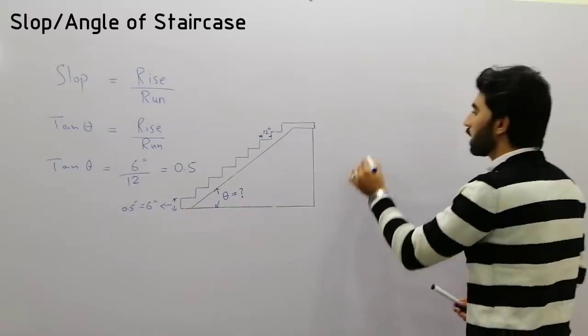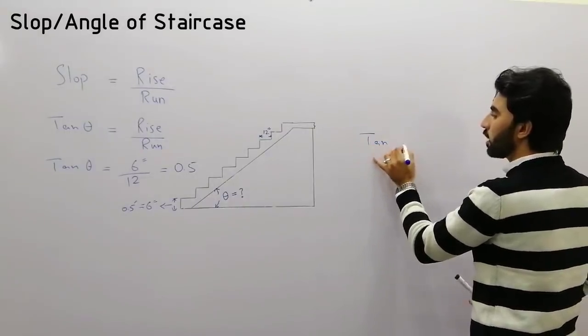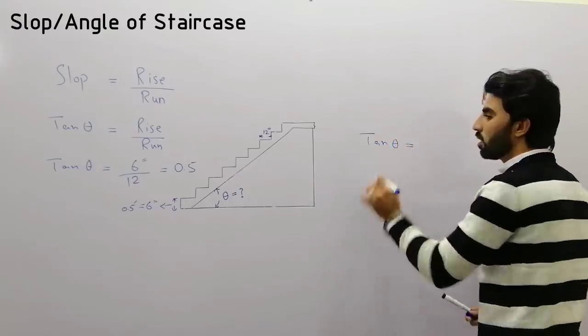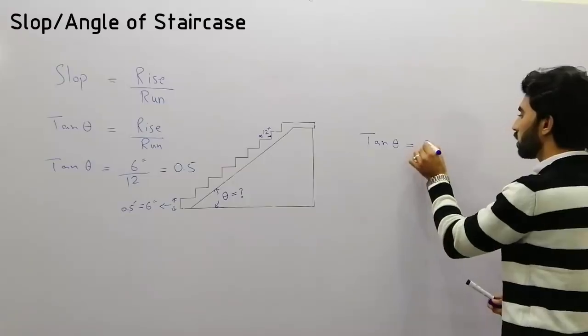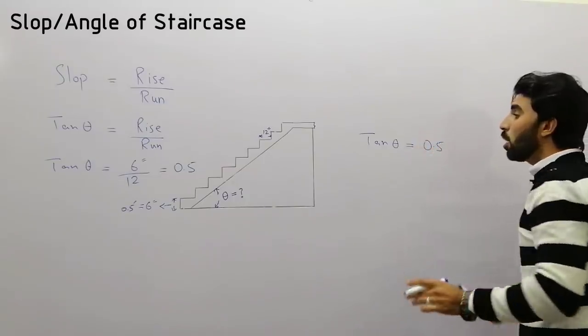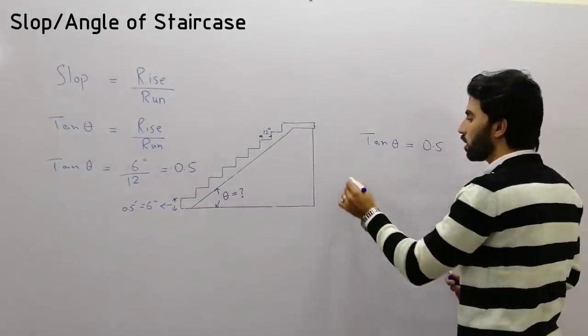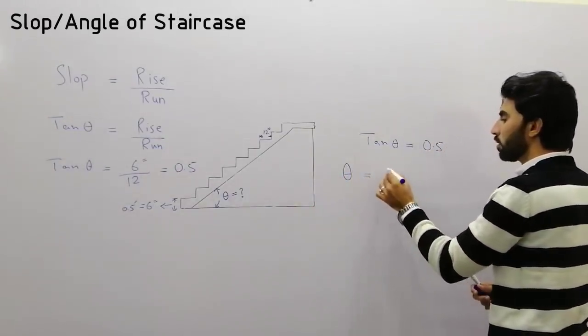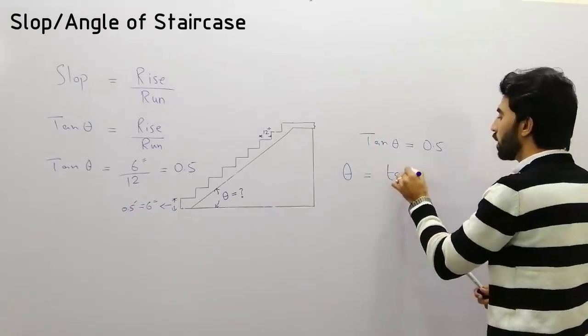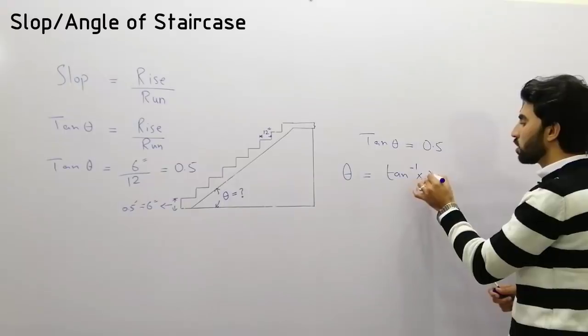So tangent alpha equals 0.5. Now I need to find the angle of the staircase, so alpha equals tangent inverse of 0.5.